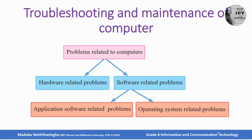Problems can occur due to hardware and software. So problems related to computers mainly fall into two types: hardware related problems and software related problems. In grade 7 we also discussed software classification. Softwares mainly divide into two parts: system software and application software. So when concerned about software related problems, there are two types: application software related problems and operating system related problems.